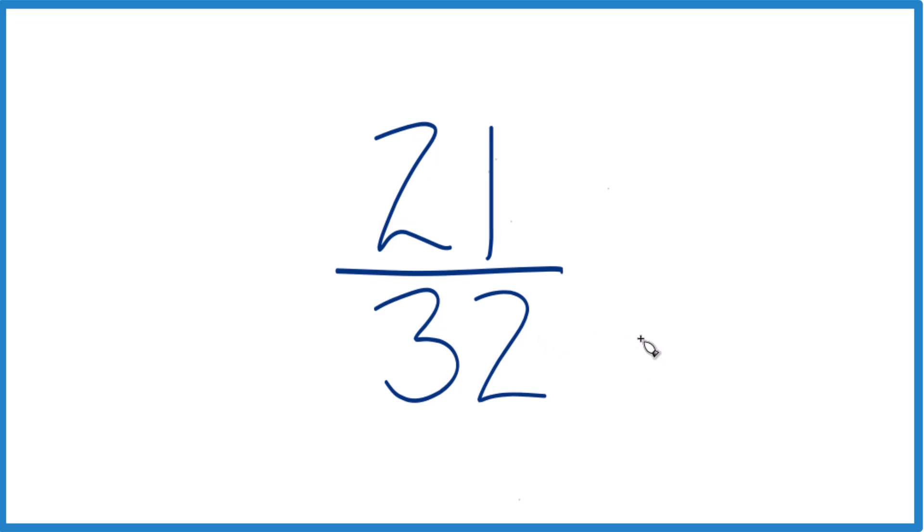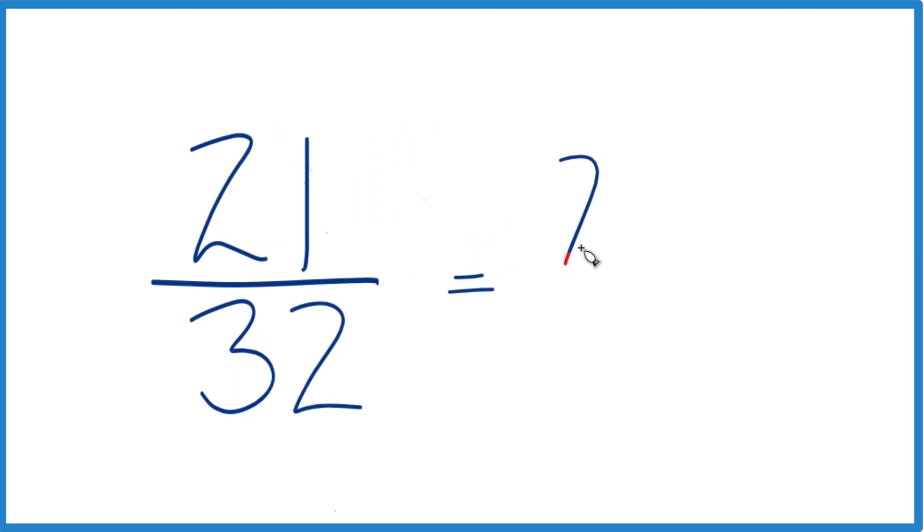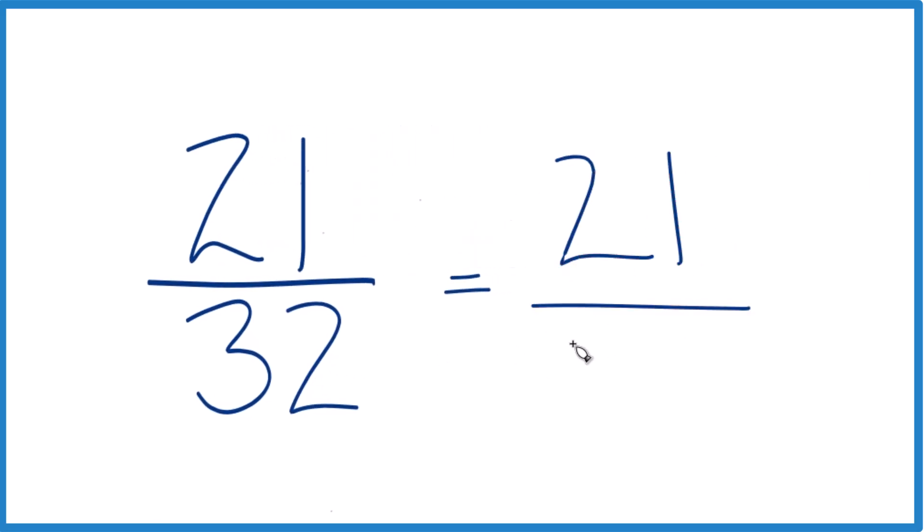So that's our common factor. We divide 21 by 1, we're going to get 21. Divide 32 by 1, you get 32. And so we're right back where we started.